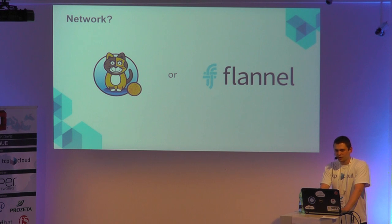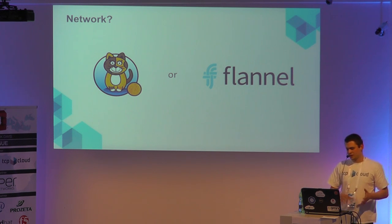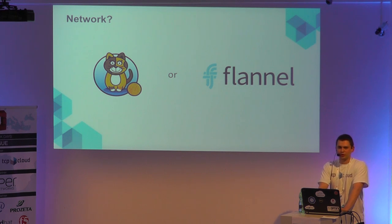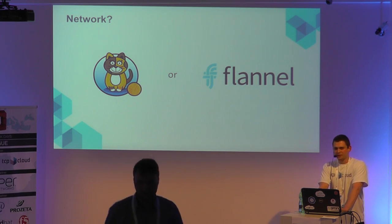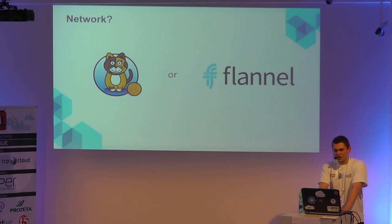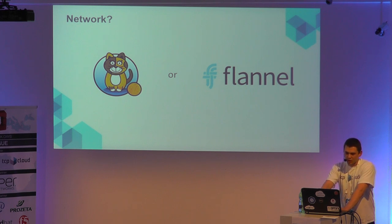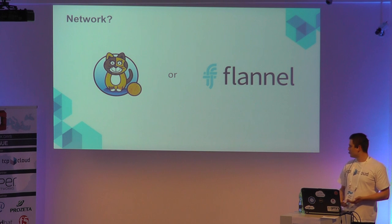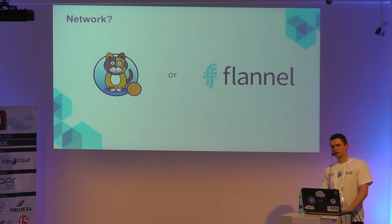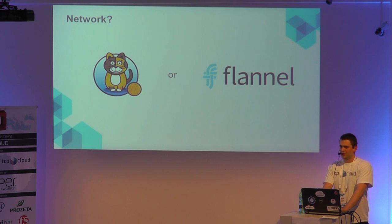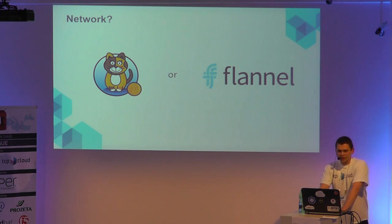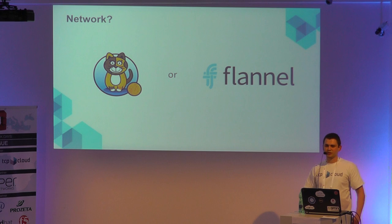There is no overlay with Calico. It uses /32 routes and uses BGP to exchange routing information. You can extend it to your physical networking via BGP — or OSPF also works. That's why we didn't use Flannel, because Flannel uses VXLAN as encapsulation and we didn't need to run the OpenStack control traffic through VXLAN tunnels.